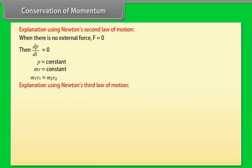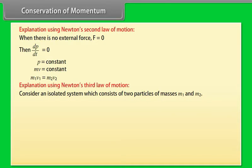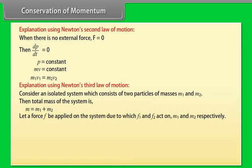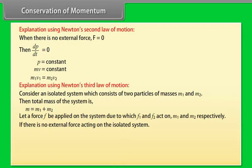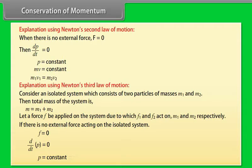Explanation using Newton's Third Law: Consider an isolated system of two particles of masses m₁ and m₂, with total mass m = m₁ + m₂. A force F is applied on the system causing f₁ and f₂ on m₁ and m₂ respectively. If there is no external force, F = 0, so d/dt(p) = 0 and p = constant. Hence, the law of conservation of linear momentum is proved.